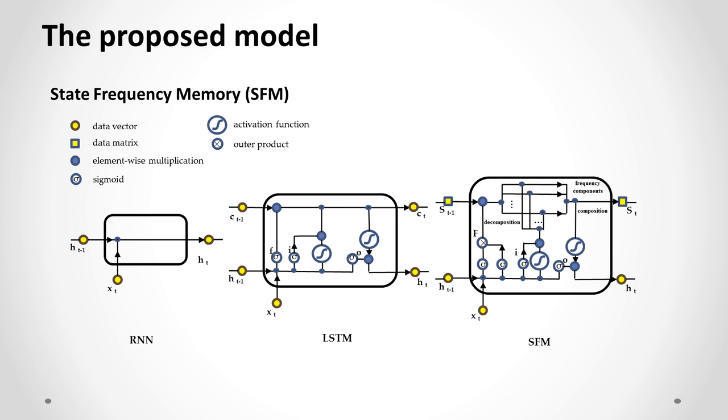Here we show the comparison between RNN, LSTM, and SFM. SFM is a variant of a recurrent neural network.